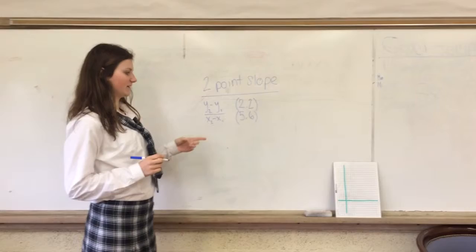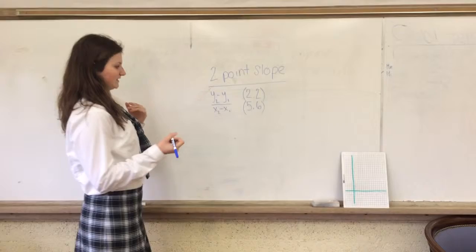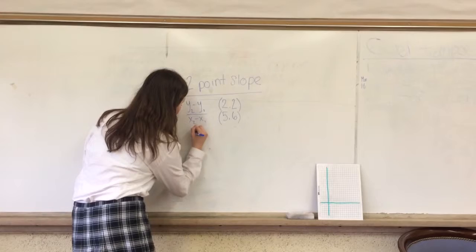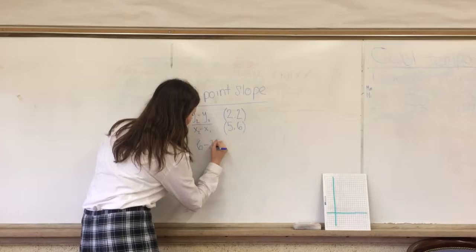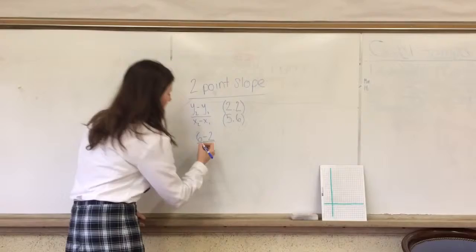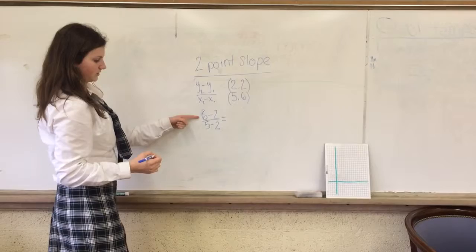And the points we're going to be using for the first example is 2, 2, and 5, 6. So the first thing you do is just put the x and y in the right places. So 6 minus 2, because those are the 2 y's, and then 5 minus 2.